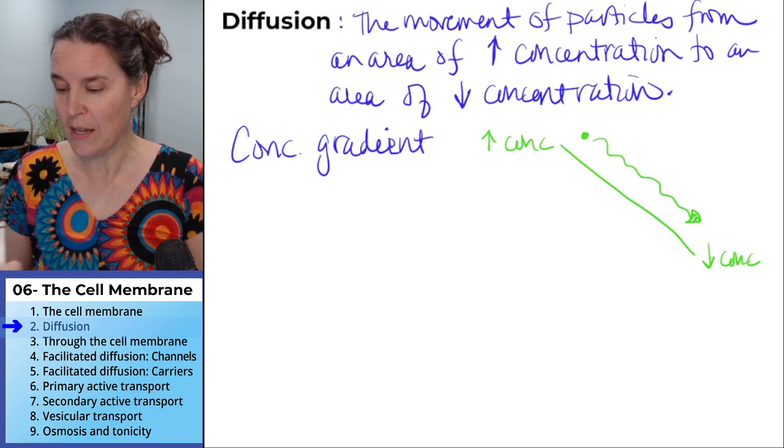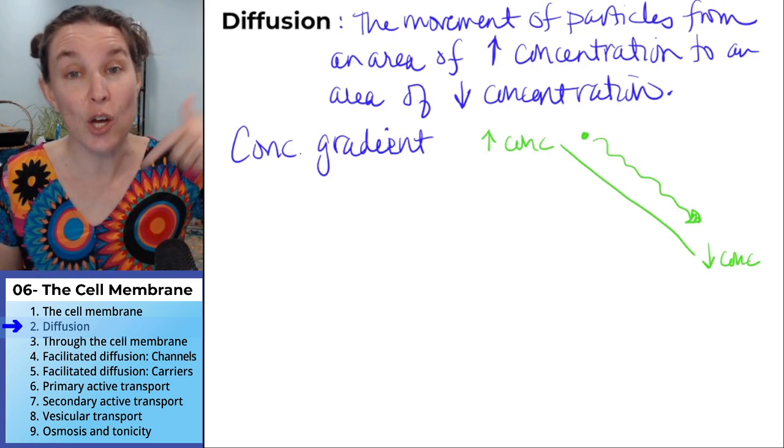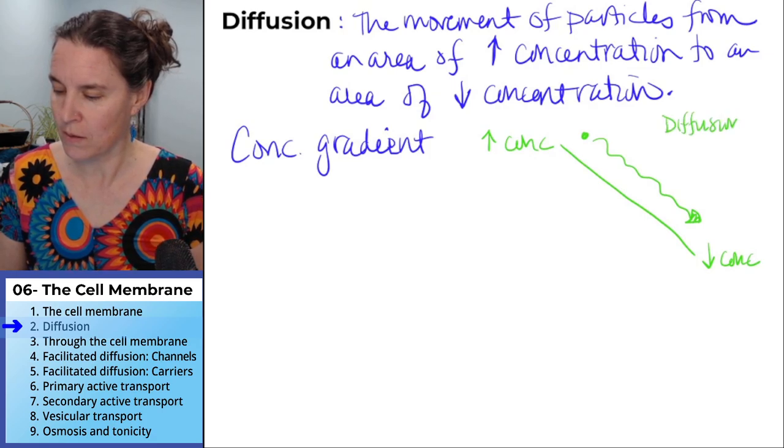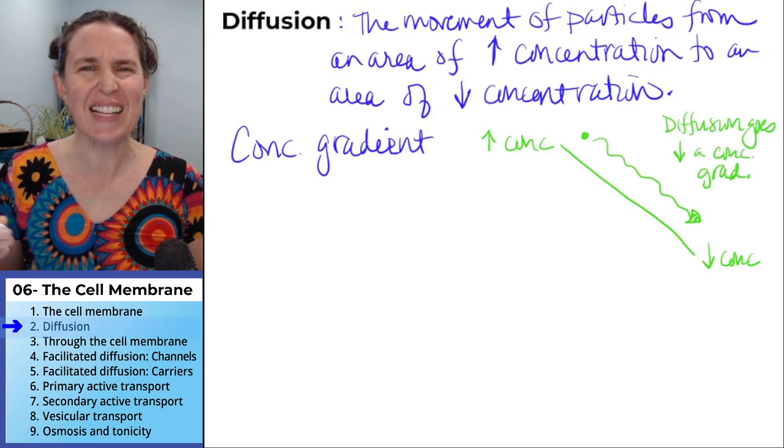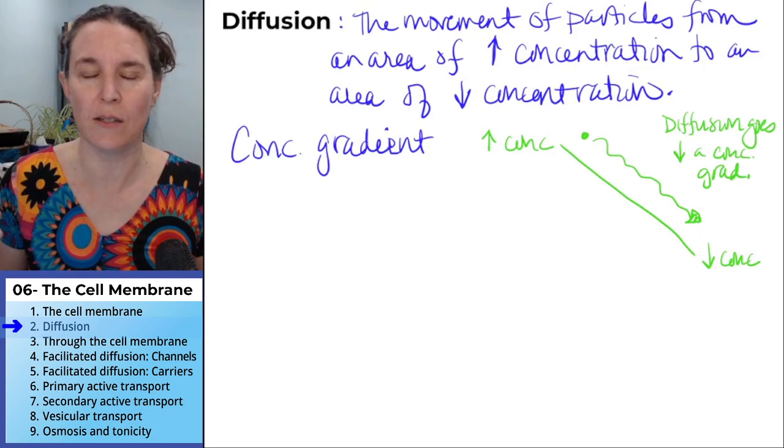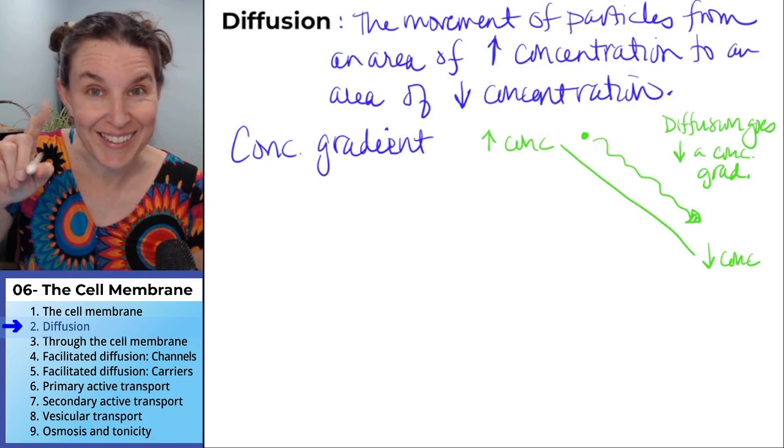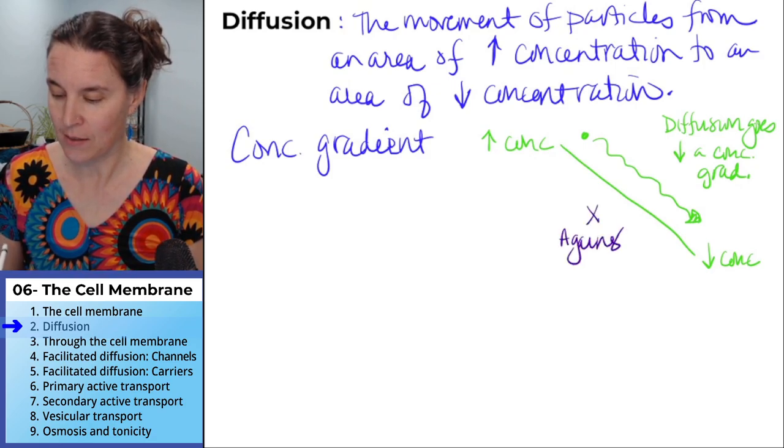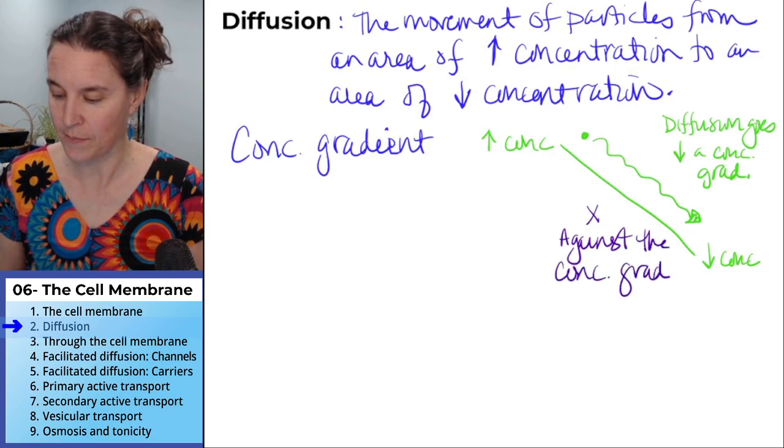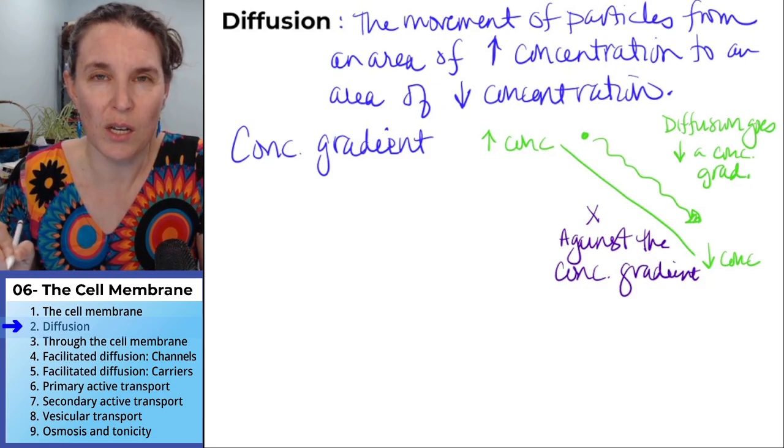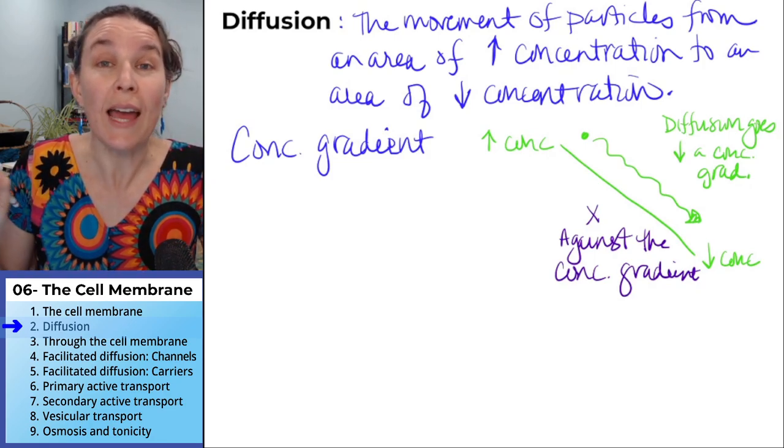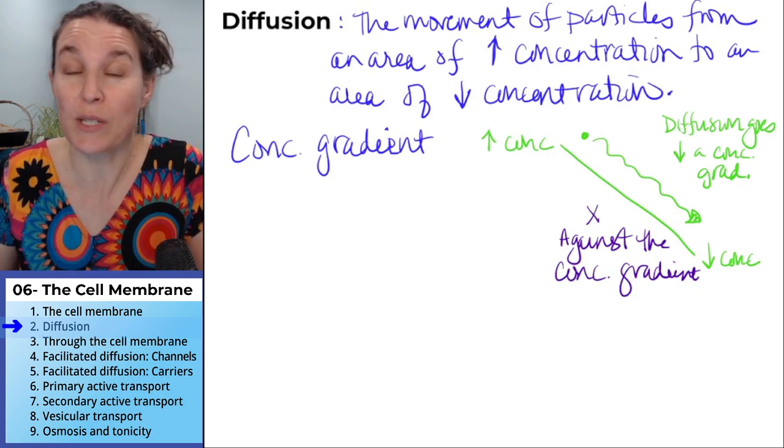If a particle diffuses, it goes down the concentration gradient. So diffusion goes down a concentration gradient. Diffusion will not move something against the concentration gradient. So in order for diffusion to work, there has to be a concentration gradient present. And then you only have one directional option. You have to go down the concentration gradient.